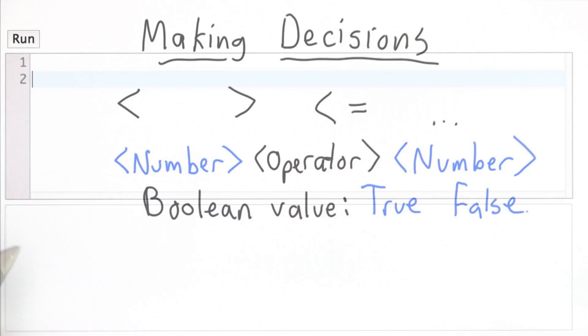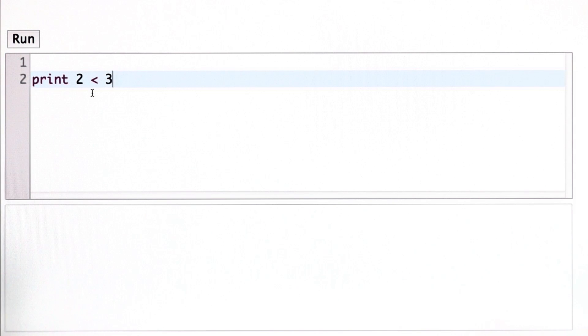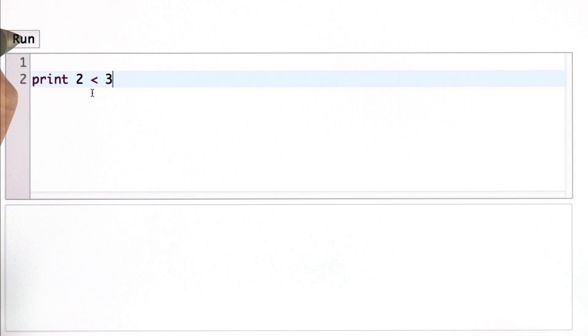So let's see some examples in the Python interpreter. First, we'll use the less than to compare 2 and 3. So 2 is less than 3, so we expect the result to be true. When we run this, we see that the result is true.